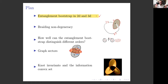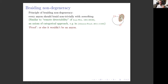That was an introduction to the Entanglement Bootstrap in 2D and 3D. Now let me focus on braiding non-degeneracy. Braiding non-degeneracy is an axiom in the categorical approach to the subject: every anyon worth its salt should braid non-trivially with something else, because otherwise it would just be a local excitation—it's sometimes called the remote detectability condition.